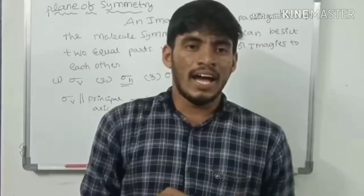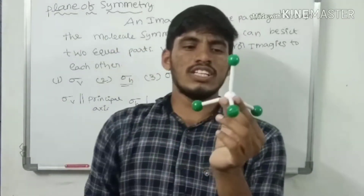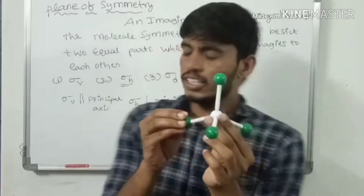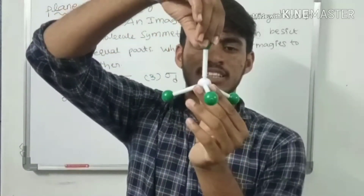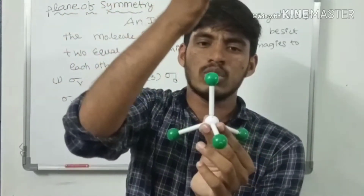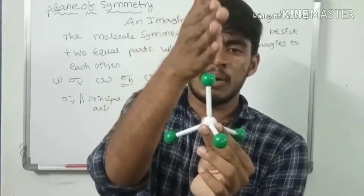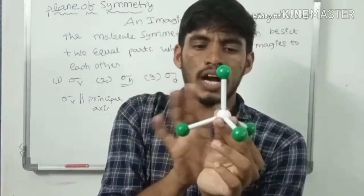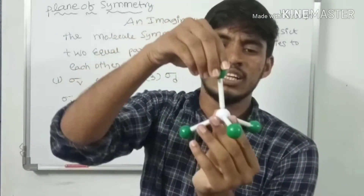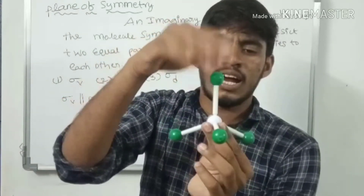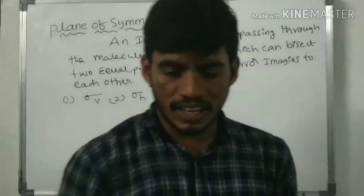Another example is methane, which has a tetrahedral shape. For sigma v, the plane passes parallel to the principal axis through one hydrogen atom and the carbon atom, with two other hydrogens as mirror images of each other. There are three such sigma v planes for methane.